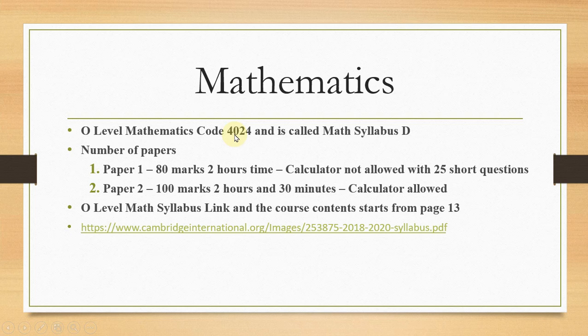Mathematics course code is 4024, called Math Syllabus D. There are two papers. Paper 1 is 80 marks, two hours to complete, and Paper 1 is known as non-calculator version, meaning calculator is not allowed. This is very important.